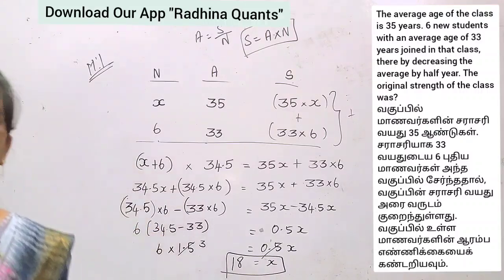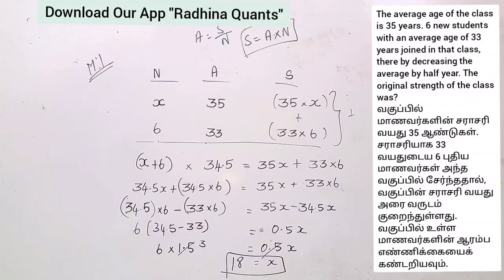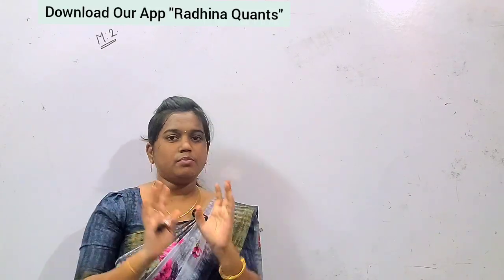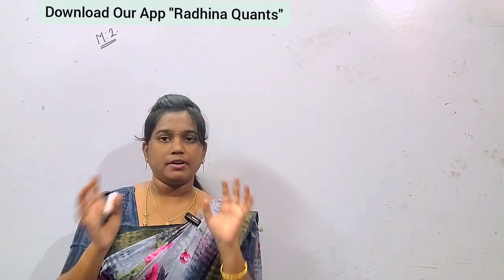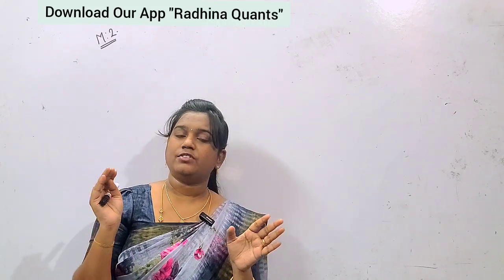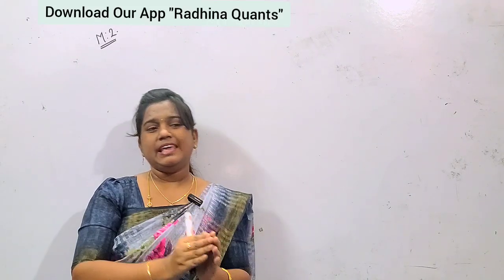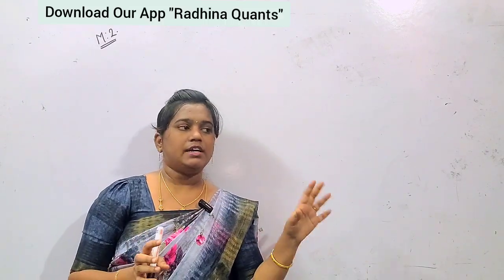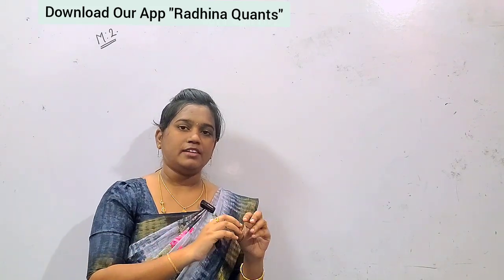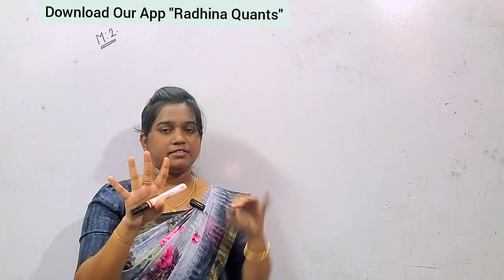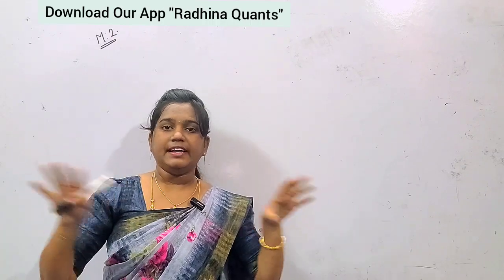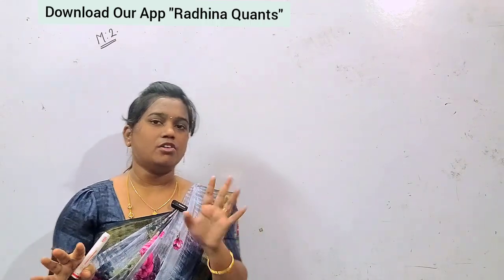Now let's look at the distribution or deviation method — this is the actual fast method. Let's go back to the average concept from the A2Z series. Average means equal distribution — for example, if there are 10 chocolates and 6 chocolates and 4 chocolates, the average is equal across all.